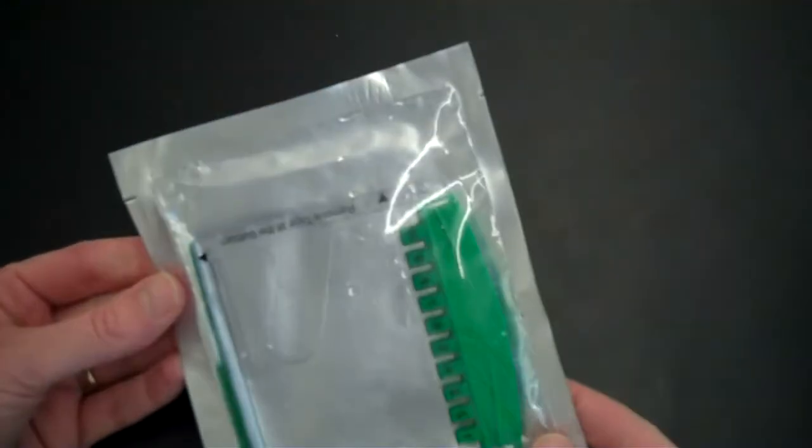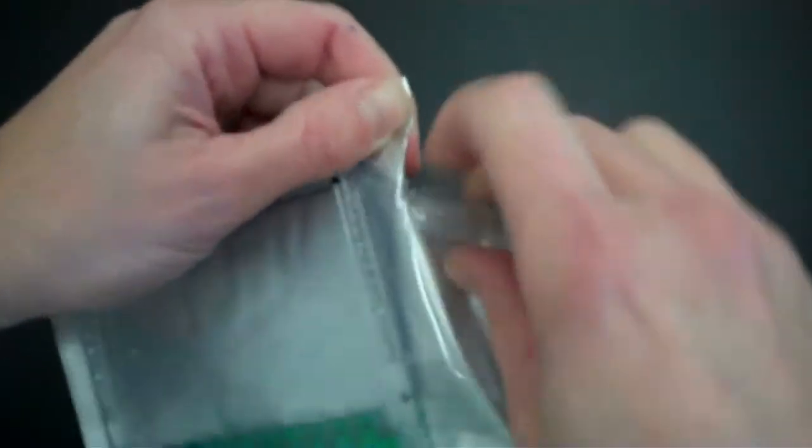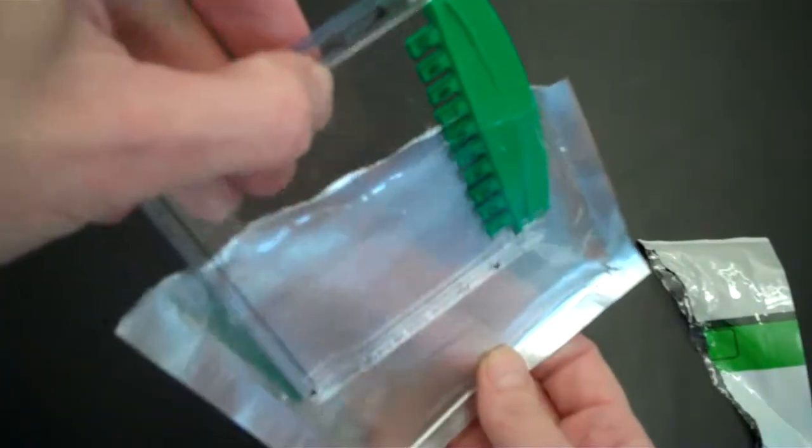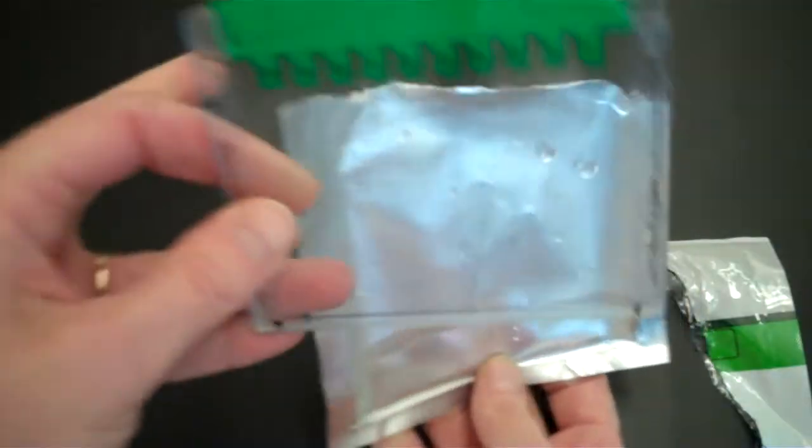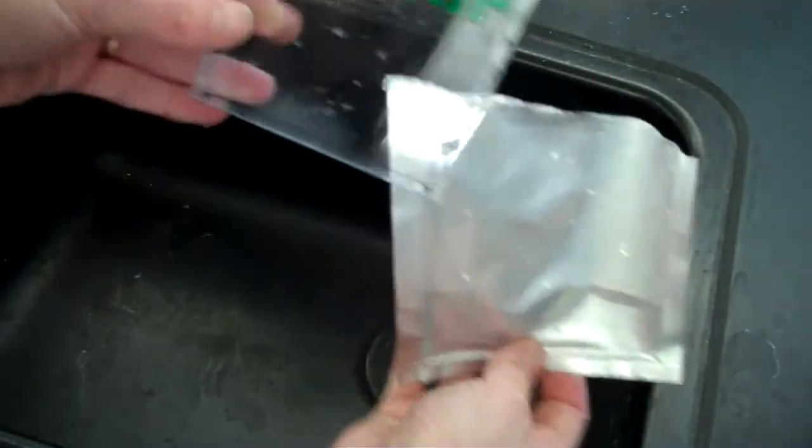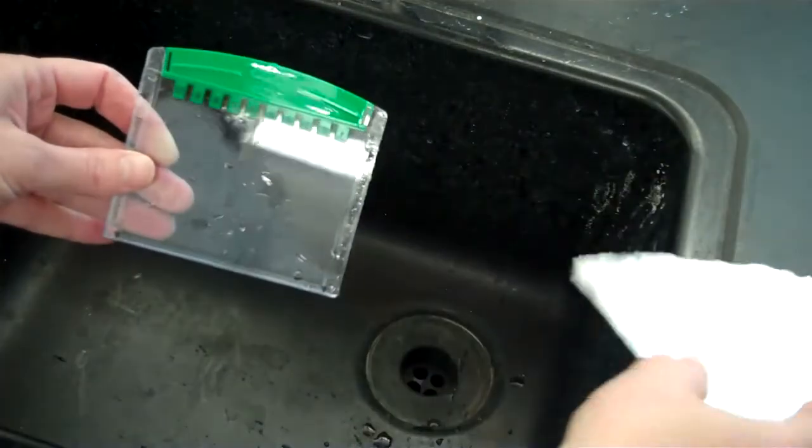The first thing that you're going to want to do is to open the package. There'll be a tab up here. You open up the package and you remove the gel. I recommend doing this over the sink. So it's in buffer, I'm just going to dump the buffer into the sink and set the package aside.